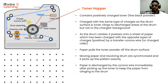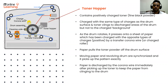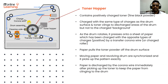Since opposite charges attract each other, the paper can pull the toner powder off the drum surface. The moving of the paper and the revolving of the drum are synchronized so it picks up the image pattern exactly. To keep the paper from clinging to the drum, it's discharged by the corona wire immediately after picking up the toner.